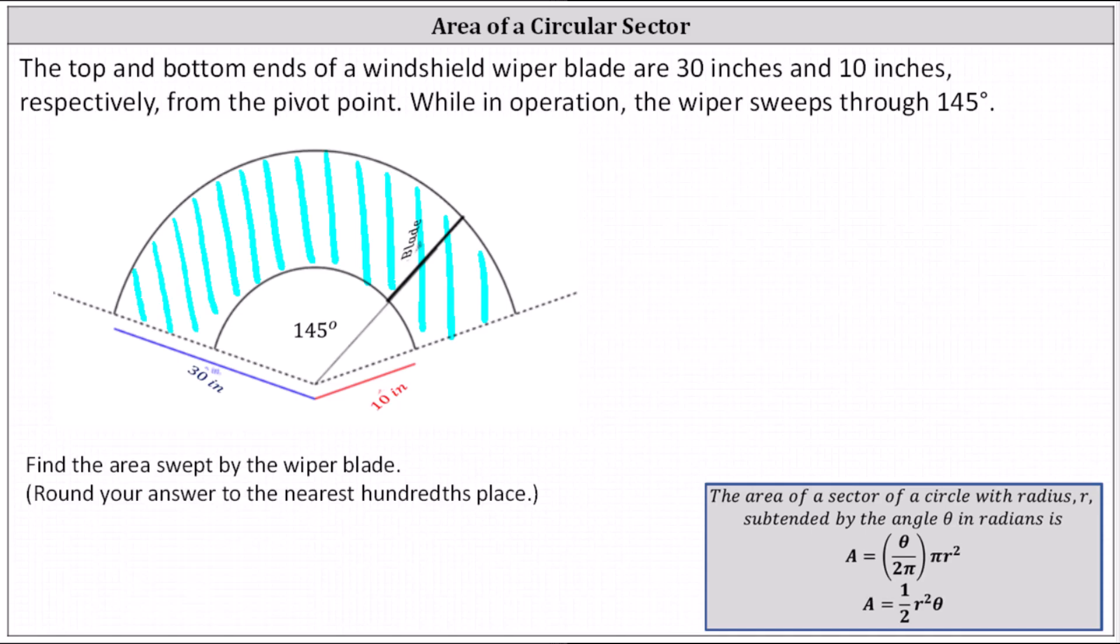The top and bottom ends of a windshield wiper blade are 30 inches and 10 inches respectively from the pivot point as pictured below. Here we see the wiper blade. While in operation, the wiper sweeps through 145 degrees, which again is labeled in the diagram.